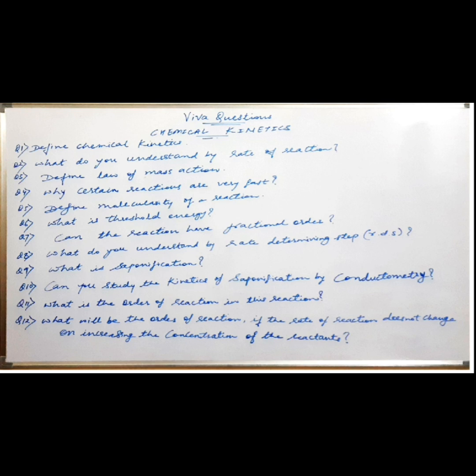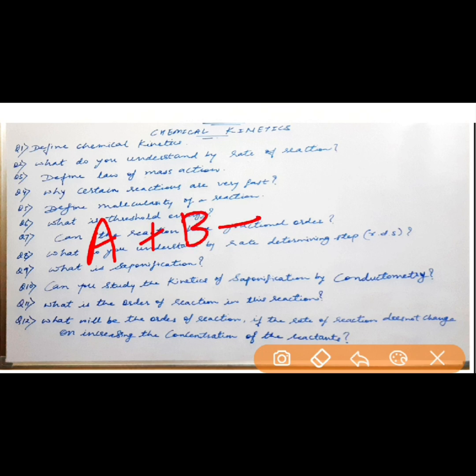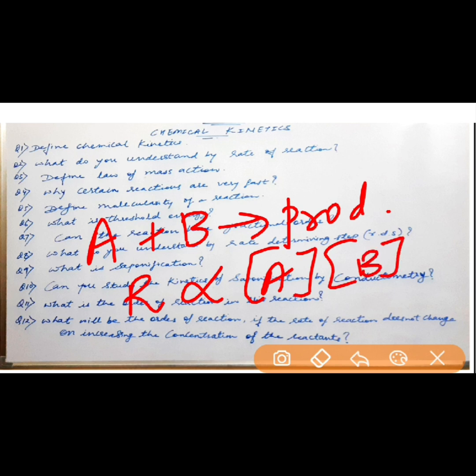Next question, it could be define law of mass action. So what is law of mass action? It states that the rate of reaction is directly proportional to the product of molar concentration of the reactants. So if you consider a general reaction, A plus B giving products, then according to law of mass reaction, rate of reaction is proportional to molar concentration of reactants, that is molar concentration of A and molar concentration of B.